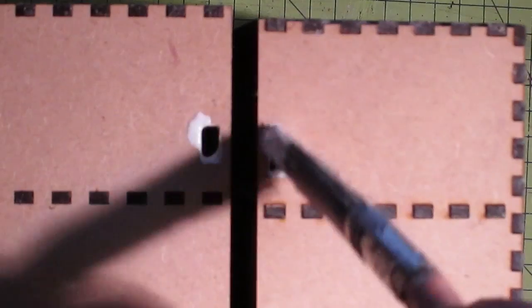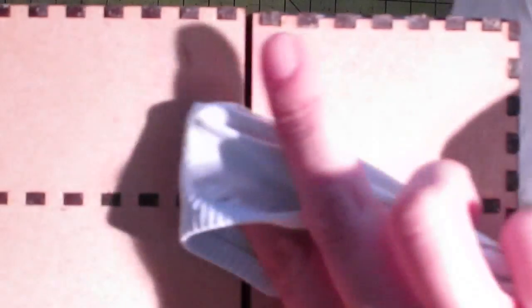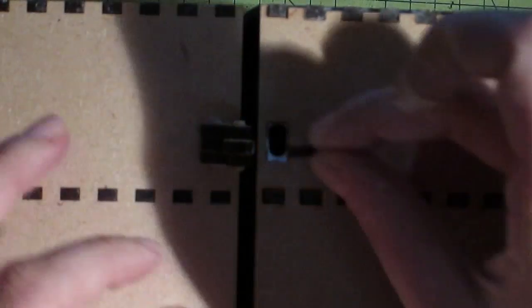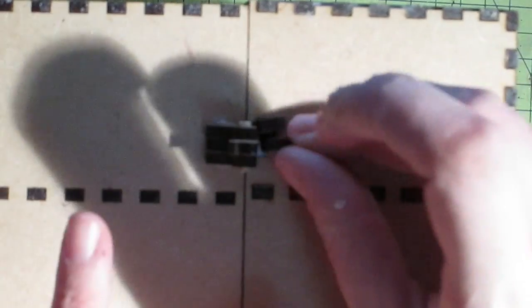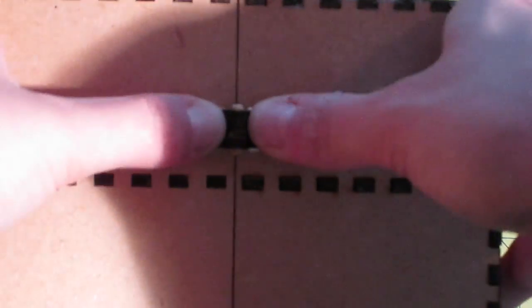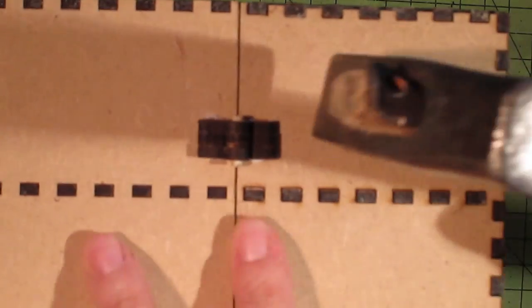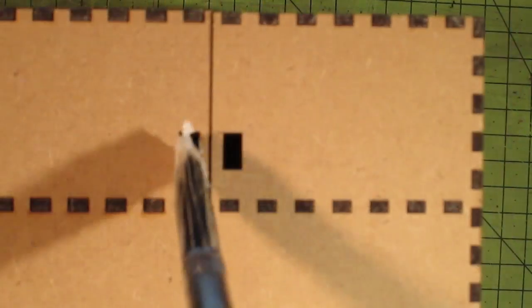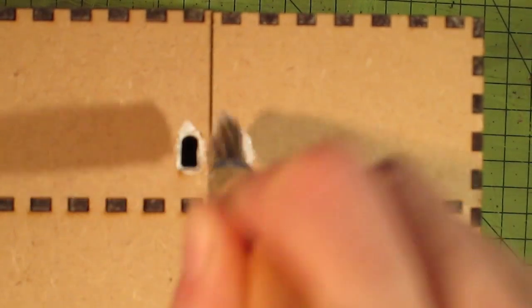And then I put glue on the holes and simply push the hinges inside of them, being careful to put the shorter pieces before. Do the same thing on the other side.